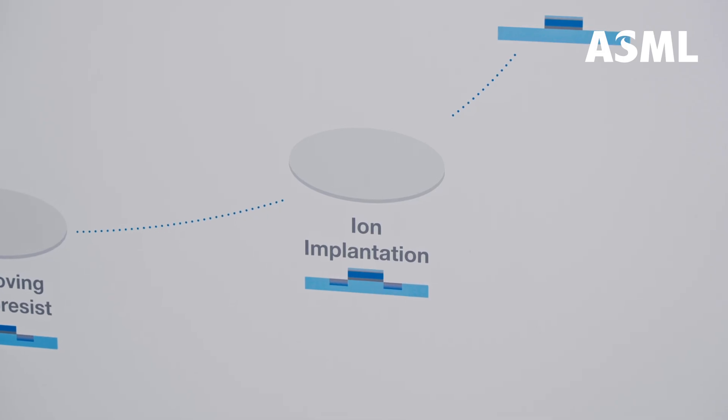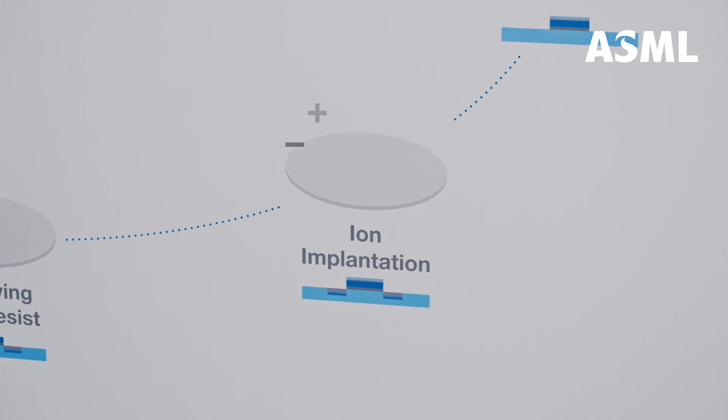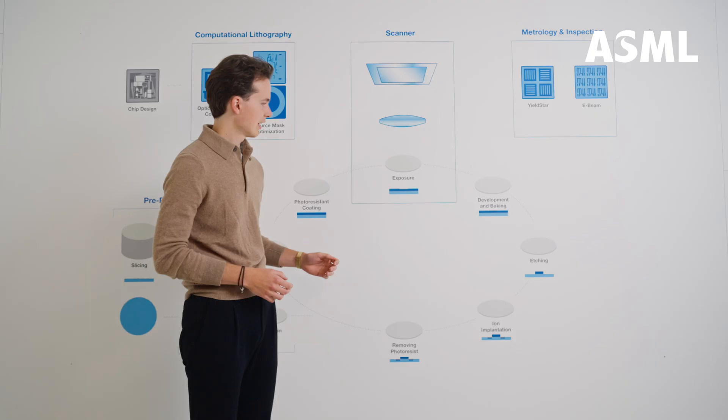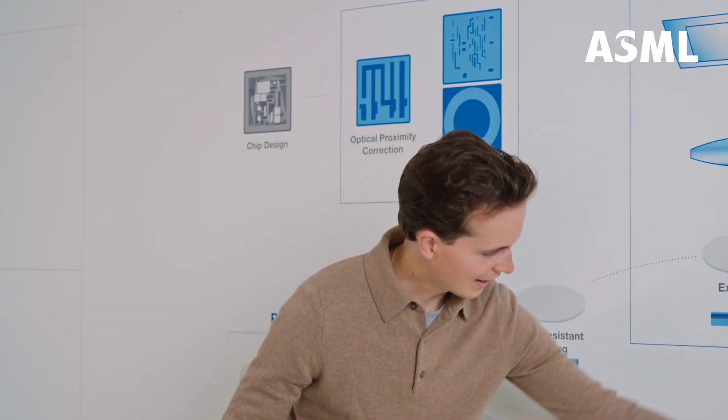Once the pattern is set, the wafer will be bombarded with positive and negative ions to tune the electrical properties of the pattern. And then, the process starts all over again for the next layer, and the next, and the next. Exactly.